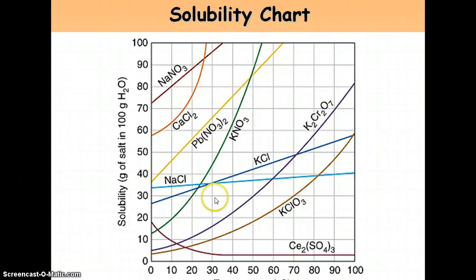Let's talk about the KCl line right here. If you are on the line at any given temperature, then that tells you that you are saturated. So let's say that at 43 degrees, which would be right here, I have 40 grams of solute. That means I'm saturated.